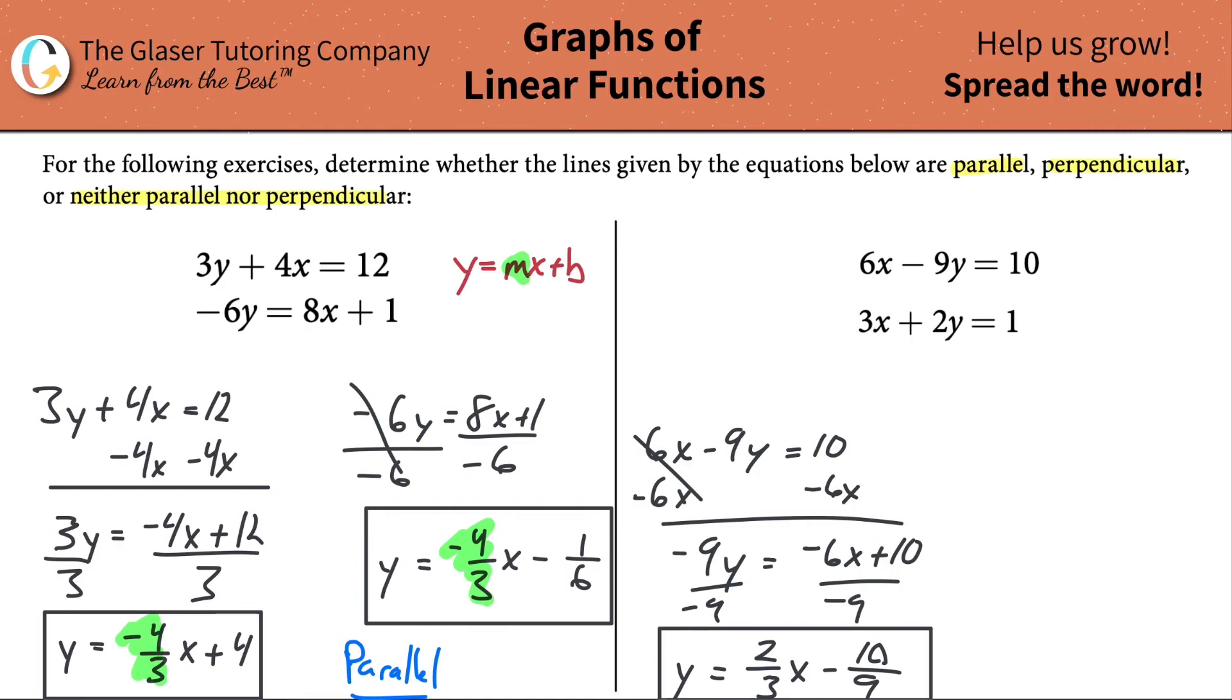Let's do the same thing for the second. We got 3x plus 2y equals 1. Subtract the 3x over. It becomes very routine over time. This is negative 3x plus 1. Divide each side by 2. And here we have y equals negative 3 over 2x plus 1 half.